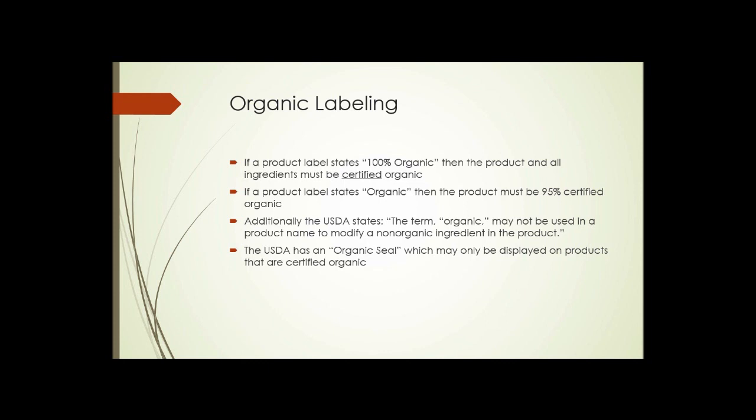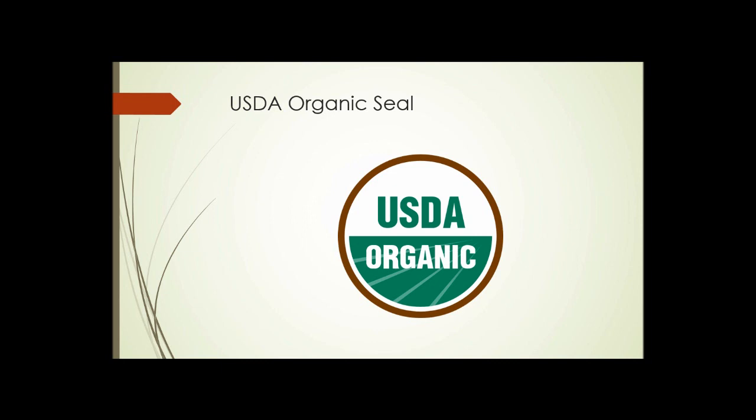If a product label simply states 'Organic,' then the product must be 95% certified organic. Additionally, the USDA states that the term 'organic' may not be used in a product name to modify a non-organic ingredient. The USDA has an organic seal, which may only be displayed on products that are certified organic. If you see this seal on a product, that product is certified organic by the USDA — within the limitations of what that means.